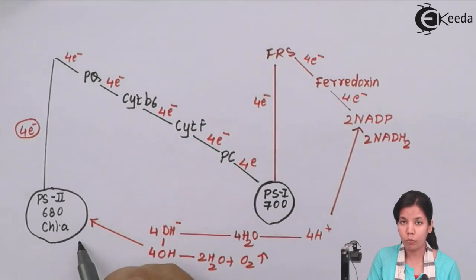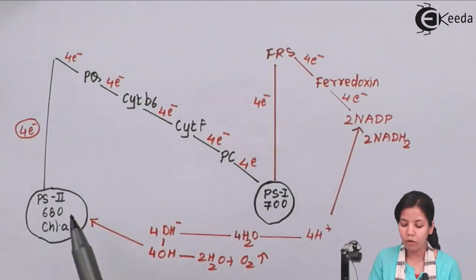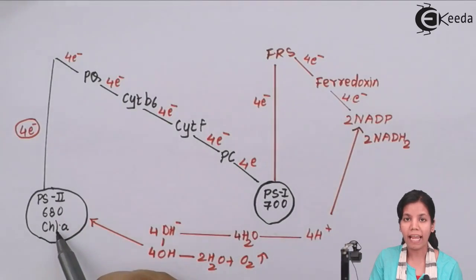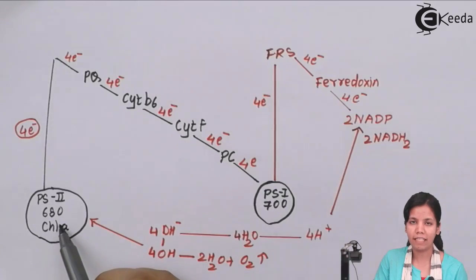This is the flow sheet or you can say the pathway through which electrons are accepted. First, sun's energy would fall on PS2 or reaction center 2 which has energy of 680. The chlorophyll a accepts sun's energy and once it has accepted sun's energy it gets excited.